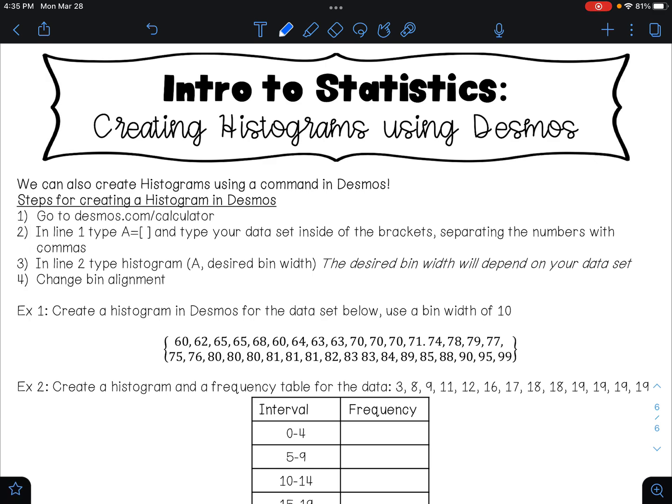In this video I'm going to show you how to create histograms using Desmos. Here we have our steps for creating histograms in Desmos. We're going to begin by going to desmos.com/calculator. In line one you're going to type A equals, and you're going to use brackets and inside of those brackets you're going to type your data set, separating the numbers with commas. In line two you're going to type histogram, parentheses A comma, and then you're going to do your desired bin width. The desired bin width will depend on your data set, and step four you want to change your bin alignment. You always want to align left every time. Let's look at example one: create a histogram in Desmos for the data set below, use a bin width of 10.